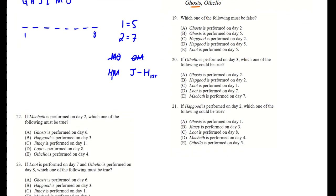Which one of the following must be false? We can think about each of these by laying out our options. Ghost is performed on day two — this means G would also be on day seven. We should still be able to do things like J, H, M, O — that seems fine. So A doesn't look like a problem. Because we have a rule for H, I'm going to look at C and D first.